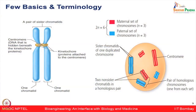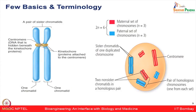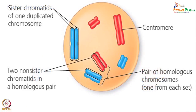Let us cover some basic terminologies before discussing the mitosis process. On the left side you can see a pair of sister chromatids, and the region where DNA is hidden behind protein complexes is known as the centromere. The protein surrounding that region is the kinetochore — the protein attached to the centromere region — and this chromosome has a pair of sister chromatids, shown in blue.